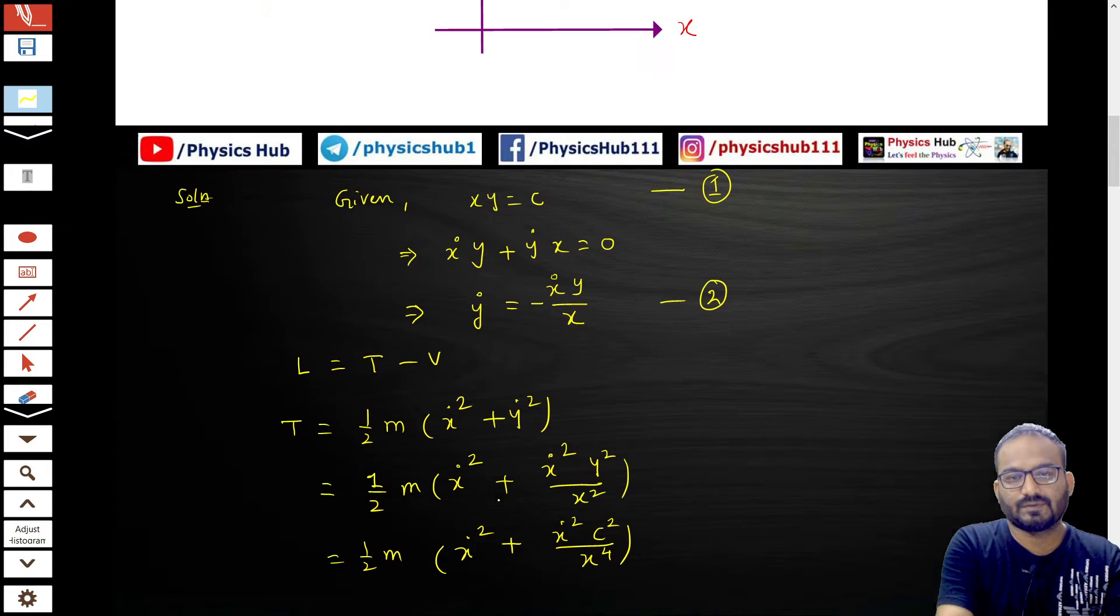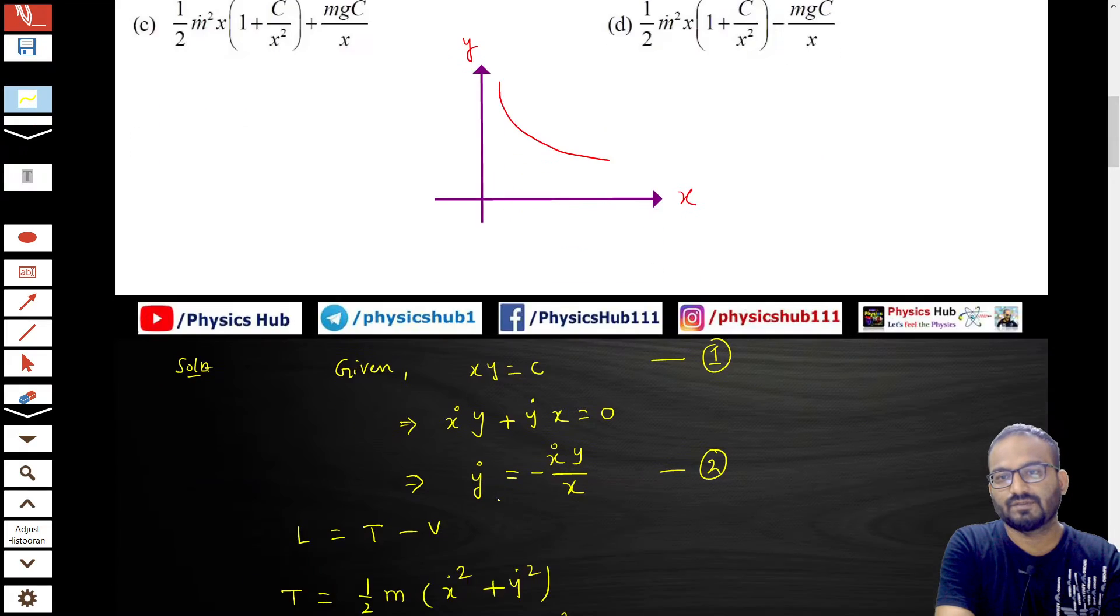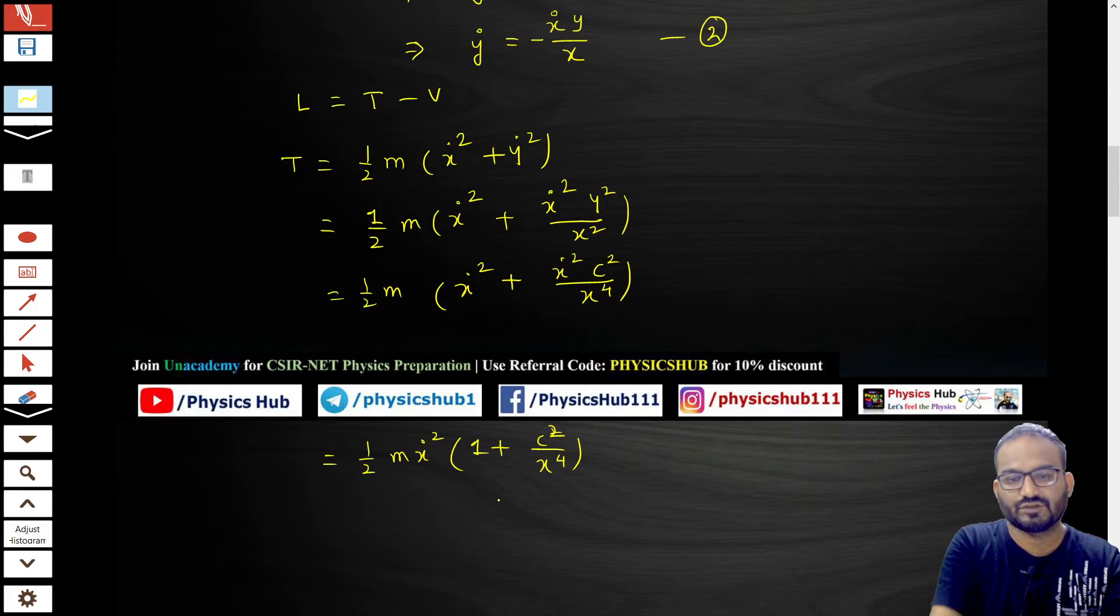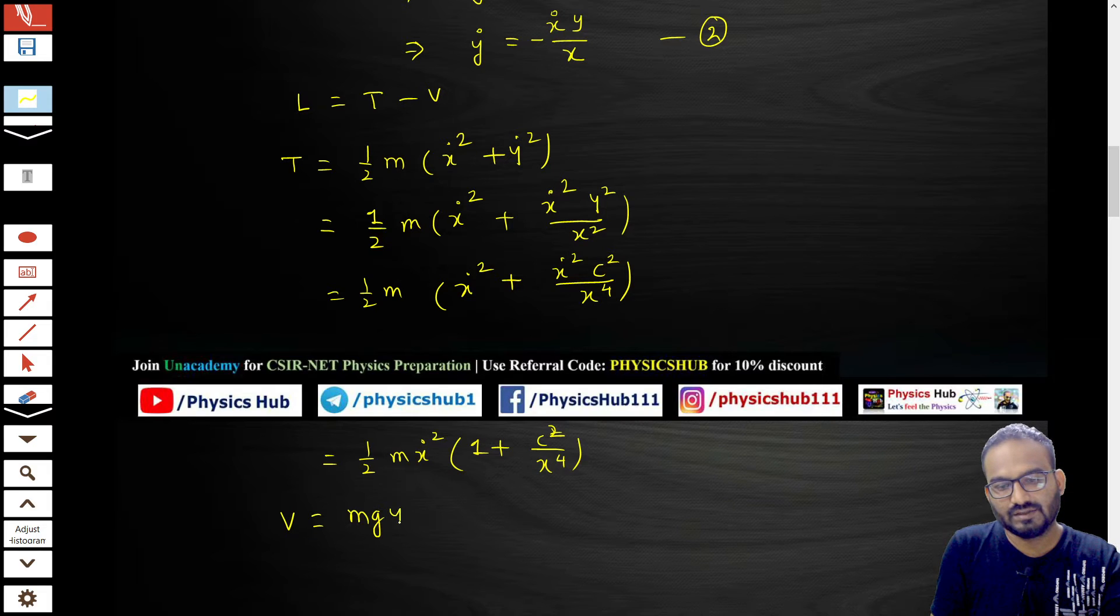Now we can write V. What is V? V = mgh. We get it. mgh is y here. y = c/x, so mg·c/x.